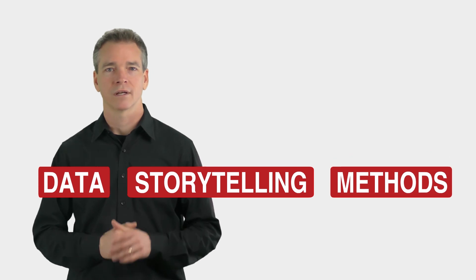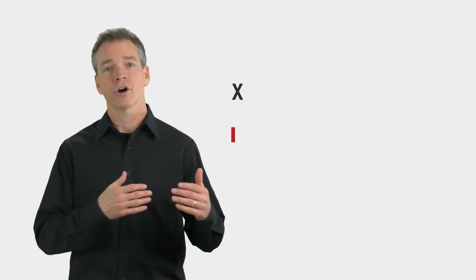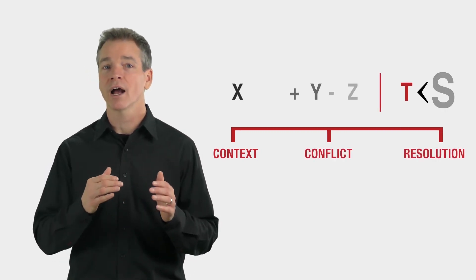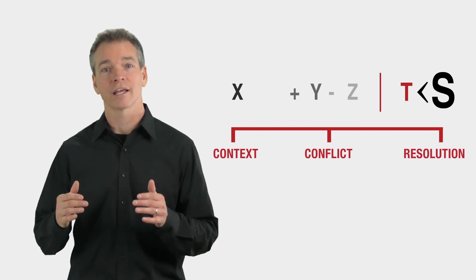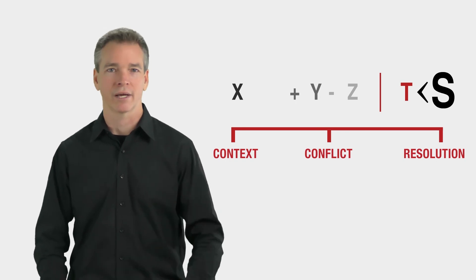You know, this is one of my two favorite data storytelling methods. I call this one the How We Got Here Method because it walks the audience through the data in chronological order, showing how we've arrived at the predicament we're in now. And then you pause to let your audience figure out what the predicament is and what should be done about it.